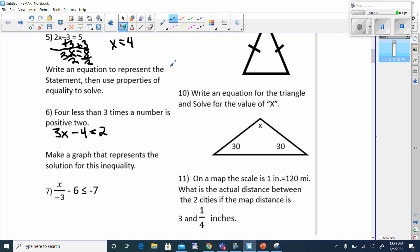Write an equation to represent these properties to solve it. If I solve this, first I'll have to add 4 to both sides. That's going to give me 3x equals 6, and then I'll divide by 3, and that means x has to be 2, because 6 divided by 3 is 2.